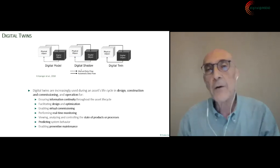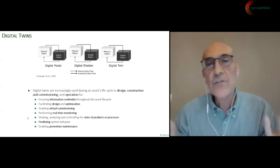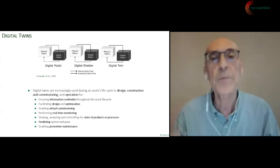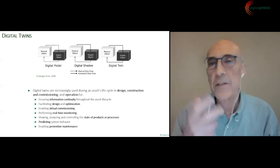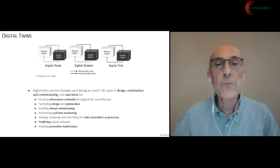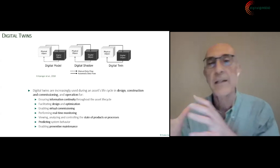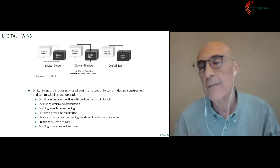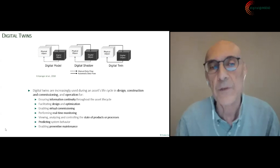Ultimately, what we want to talk about today in terms of digital twins is the two-way automatic exchange between the physical object and its software implementation. Not only the information exchange between these two systems, but also that policy changes and parameter resetting are done automatically. When we have this type of two-way automatic information flow between a physical system and its digital twin, that is the environment we're focusing on in terms of the potential contributions of digital twins.